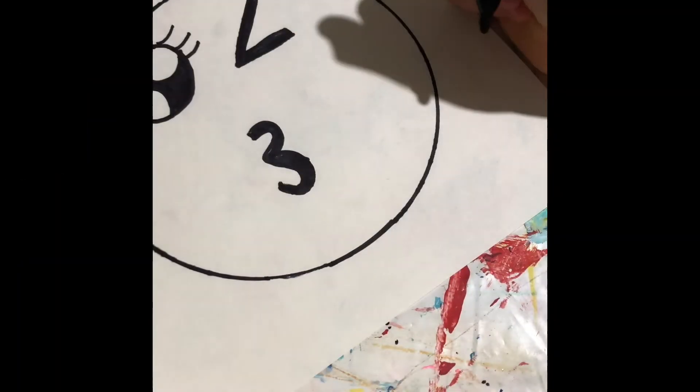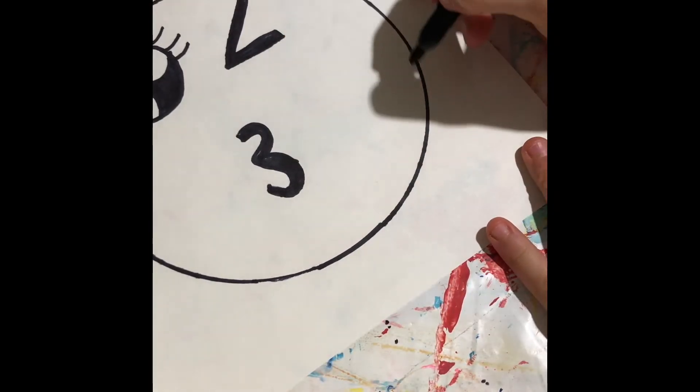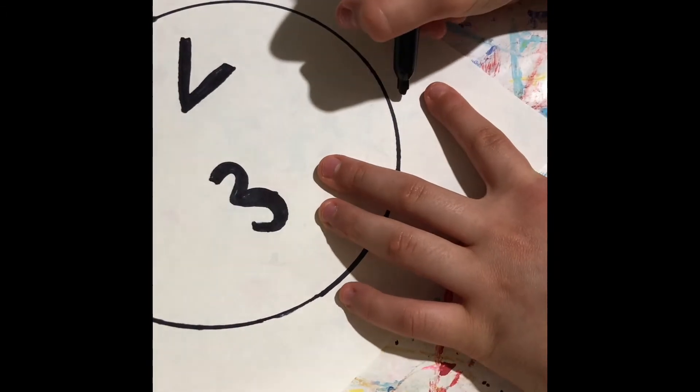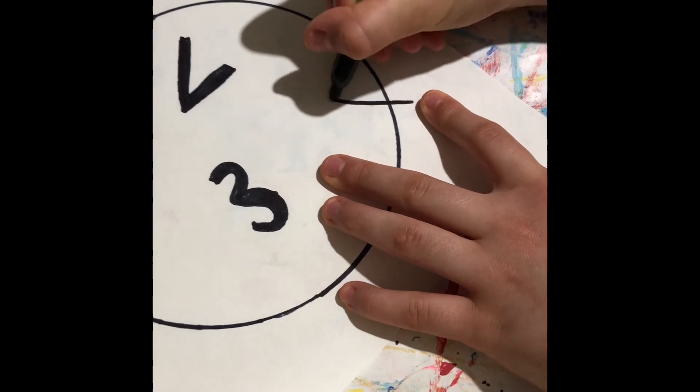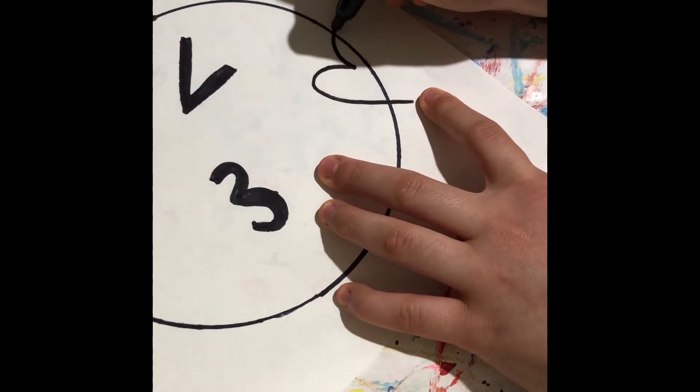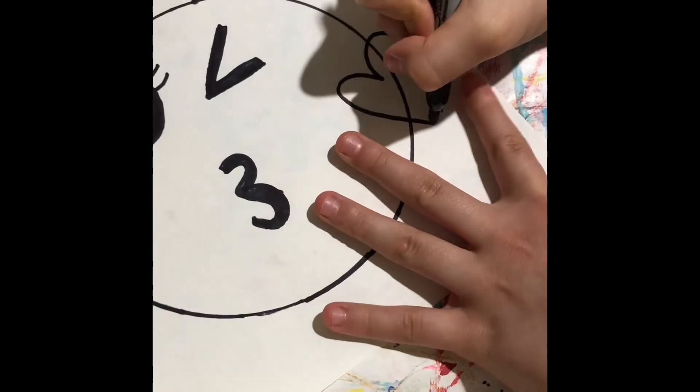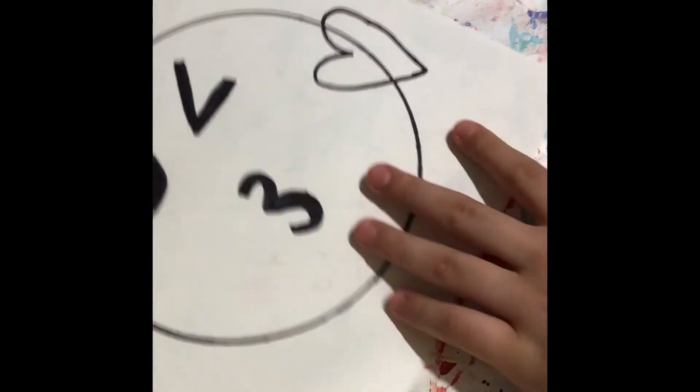Okay, so now we're gonna do the little heart so it's gonna look like the kissy lips is blowing a heart. So we're gonna go right over here and we're gonna start right here and we're gonna make a heart just like this, just like this. And now you can make it thicker, get it thicker.